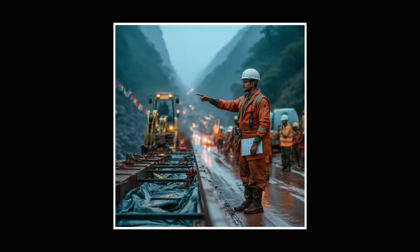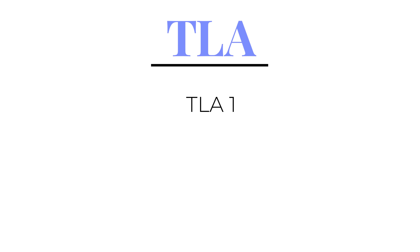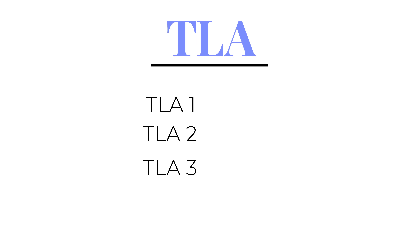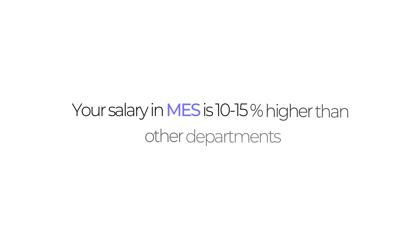Same goes for CES Roads. But the story changes completely when you shift to military organizations like MES or BRO. In MES, mostly you are posted in remote locations, and if posted in remotes you will get Tough Location Allowance, called TLA. This varies with the level of toughness, defined at three levels: TLA 1 gives ₹5,300 per month; TLA 2 gives ₹3,400 per month; and TLA 3 gives ₹1,800 per month. These TLA amounts were hiked by 25% once the dearness allowance exceeded 50%, so factor in the current rate. Because of this one allowance alone, your salary in MES is around 10 to 15% higher than CPWD, Railways, or CES Roads counterparts.